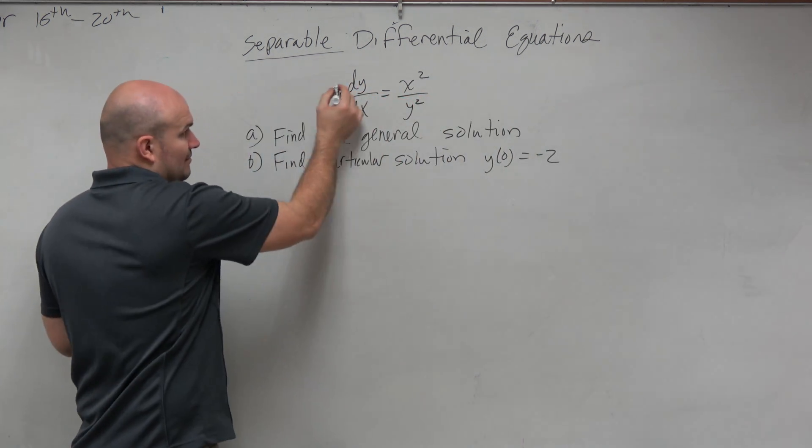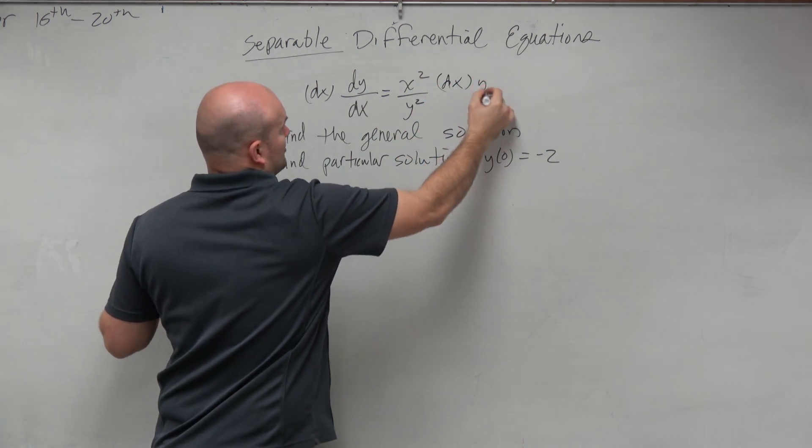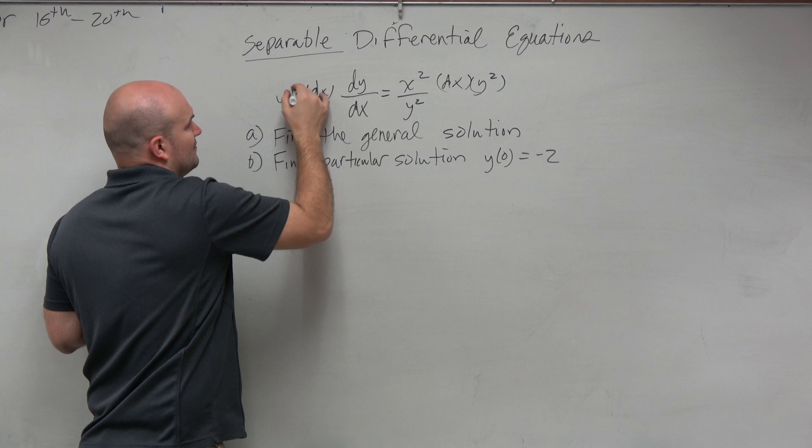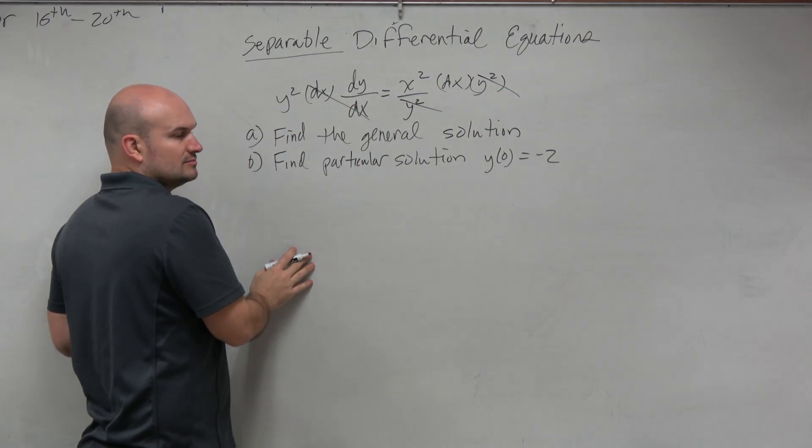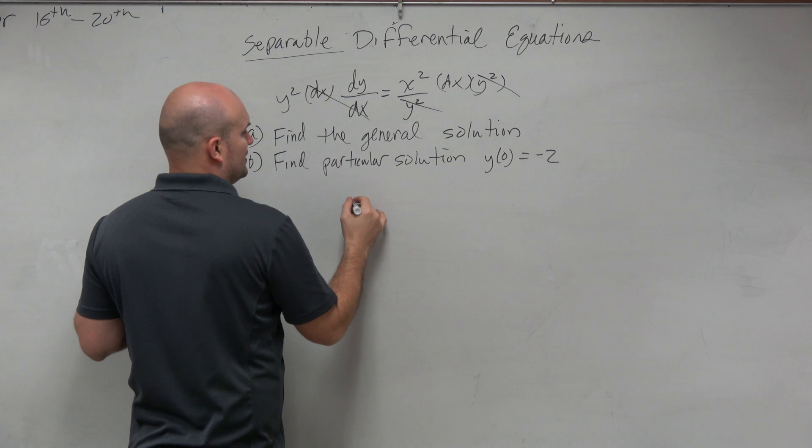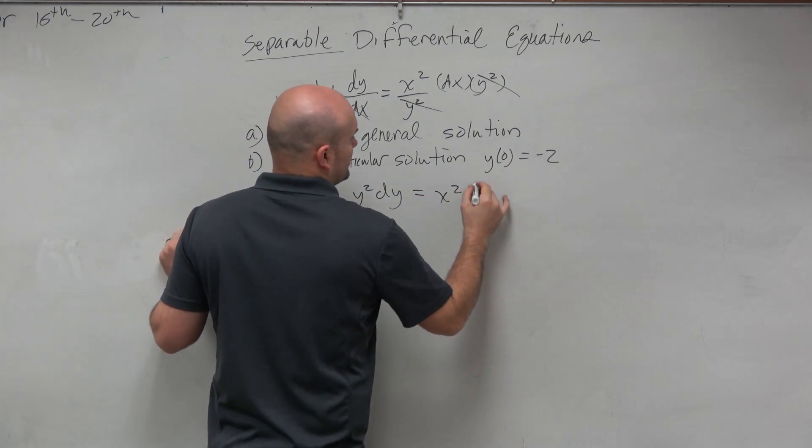So when doing that, when you multiply by dx on both sides, and if you multiply by y squared on both sides, it's also kind of like doing a cross product. And therefore, you get y squared dy equals x squared dx.